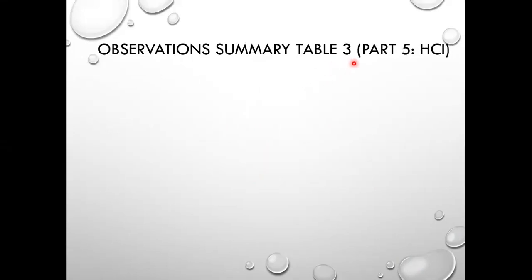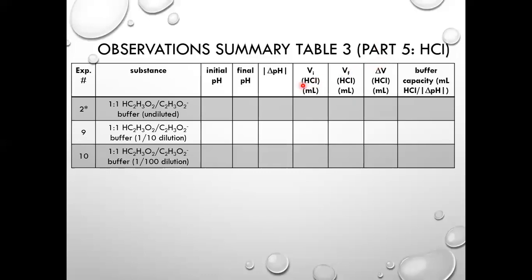Observation Summary Table 3 covers Part 5, the dilution experiments. We dilute the 1:1 buffer by a factor of 10 and also by a factor of 100, then run similar experiments — recording the initial and final pH values, calculating the absolute change in pH. I'll provide the initial and final volumes; calculate the change in volume of HCl and then the buffer capacity for each diluted buffer solution. Note that the undiluted 1:1 row has already been done, so copy that data from Table 1, so we can clearly see the effect of dilution on the buffer capacity of our 1:1 acetic acid/sodium acetate solution.